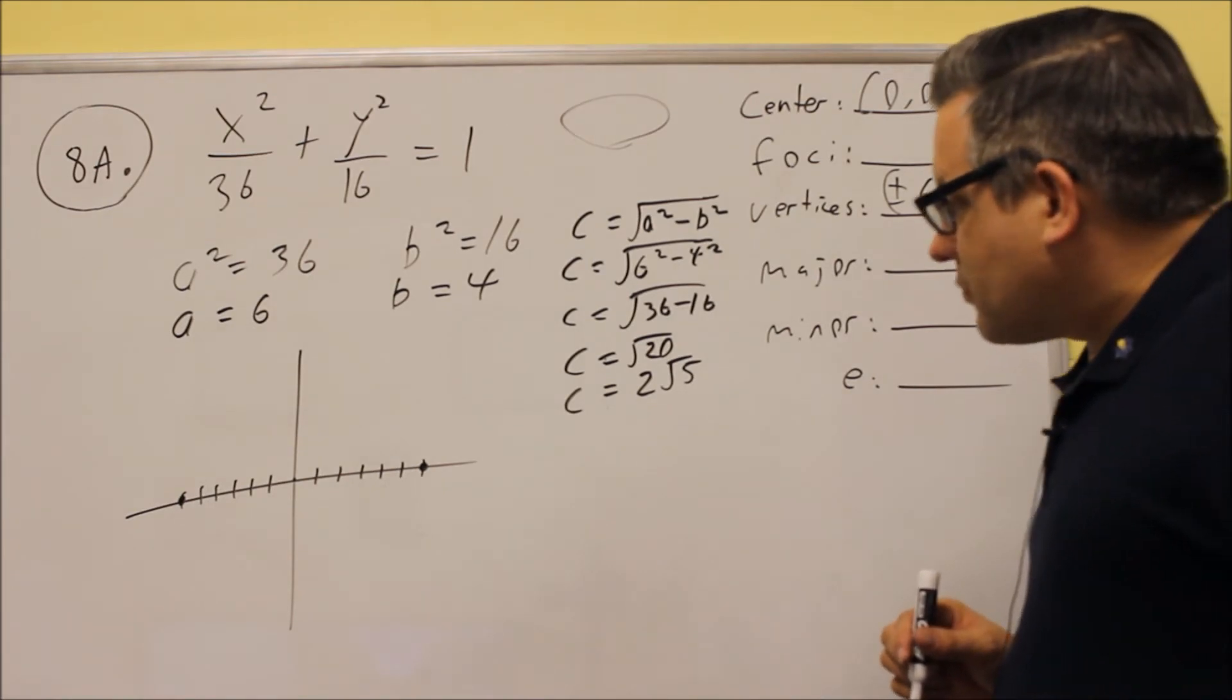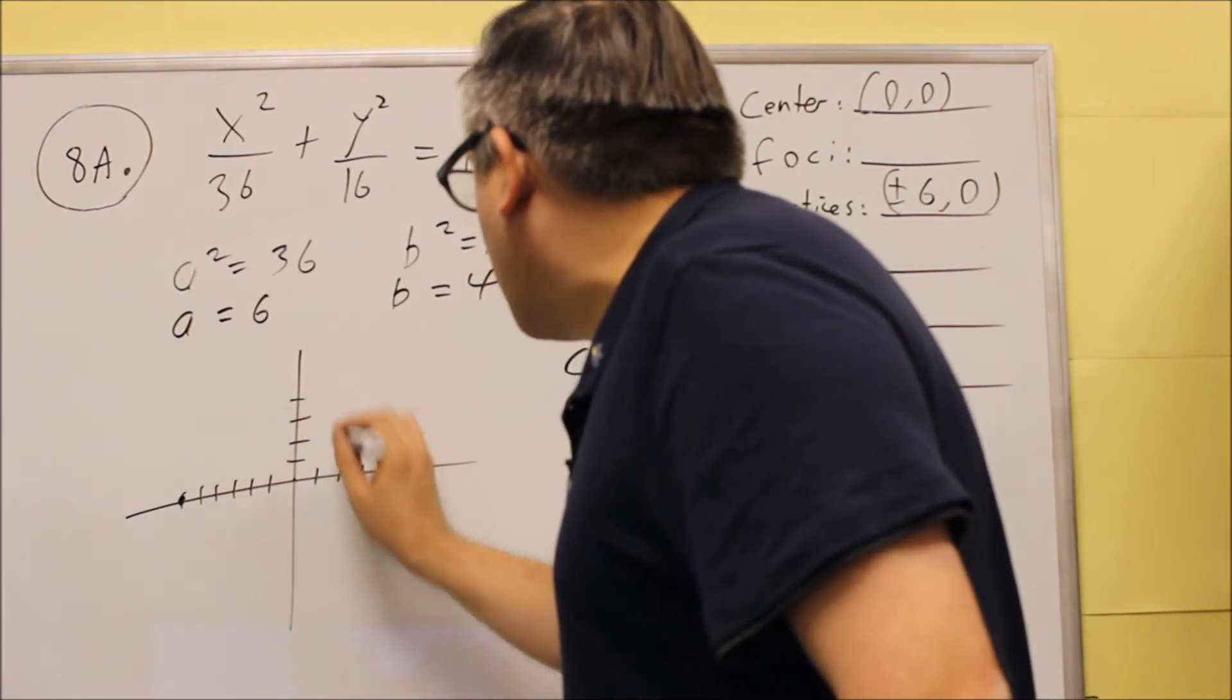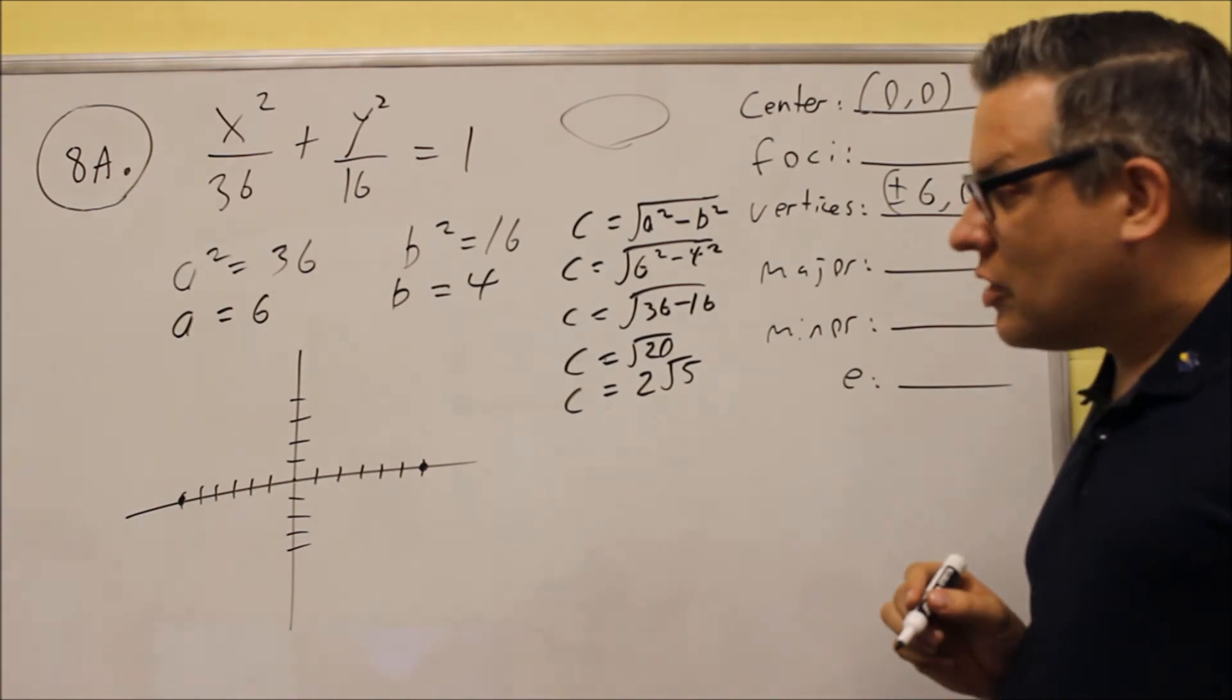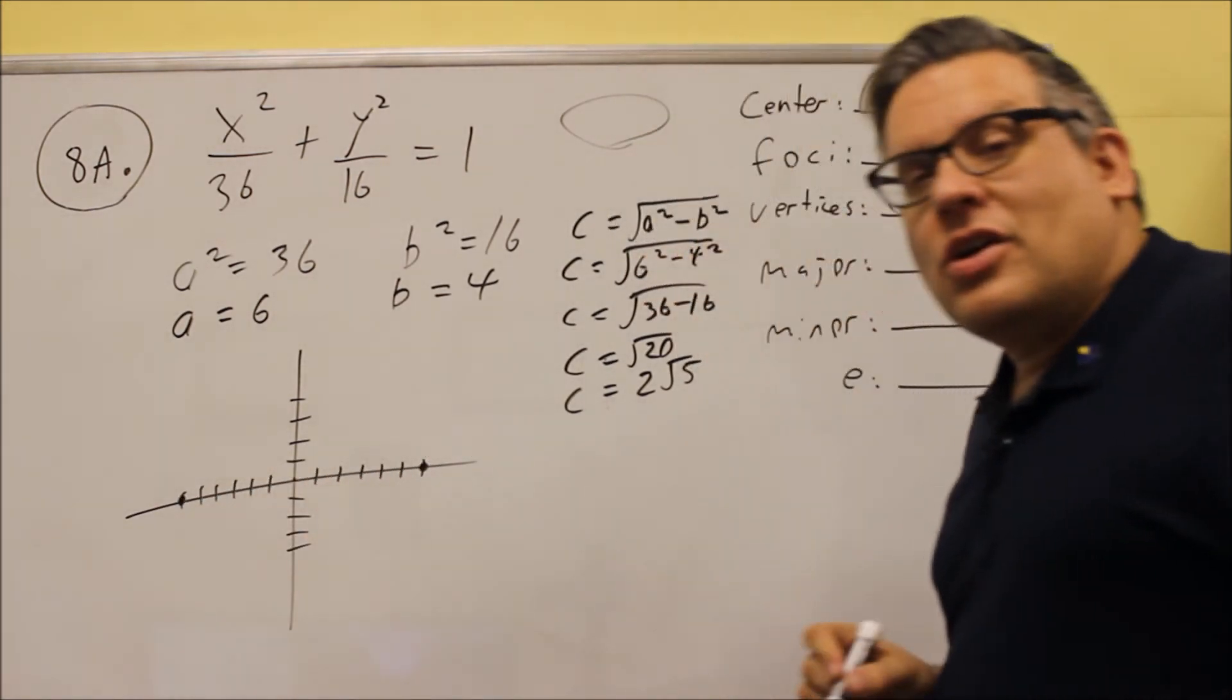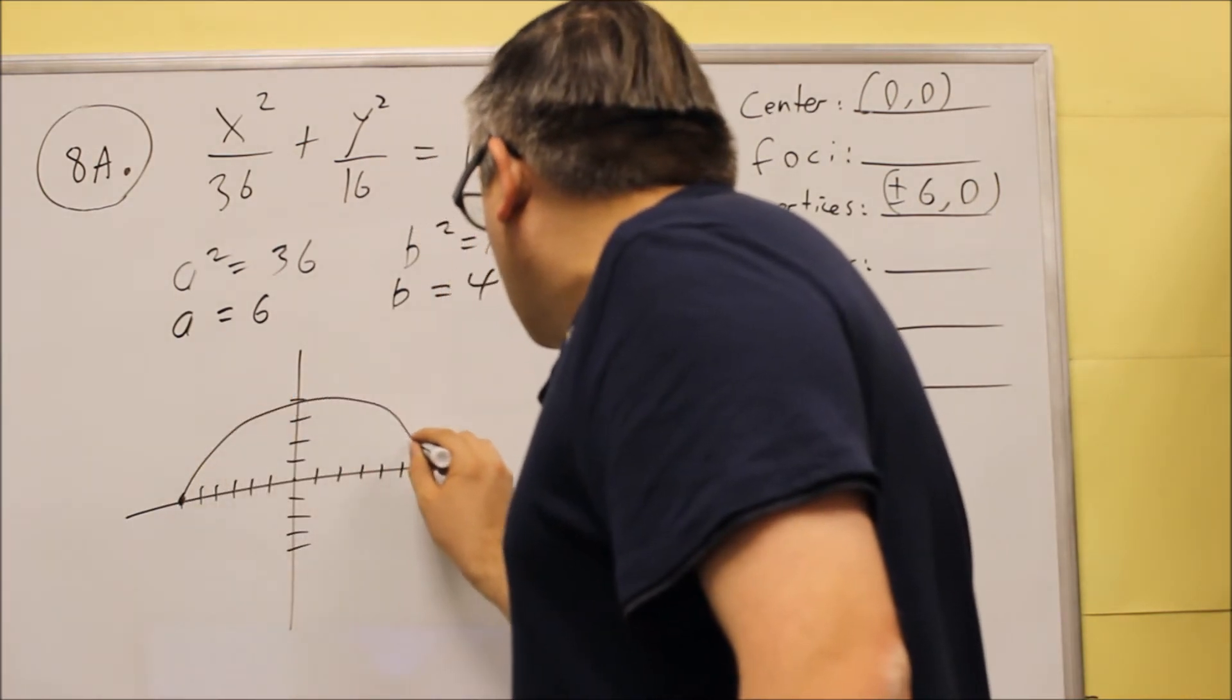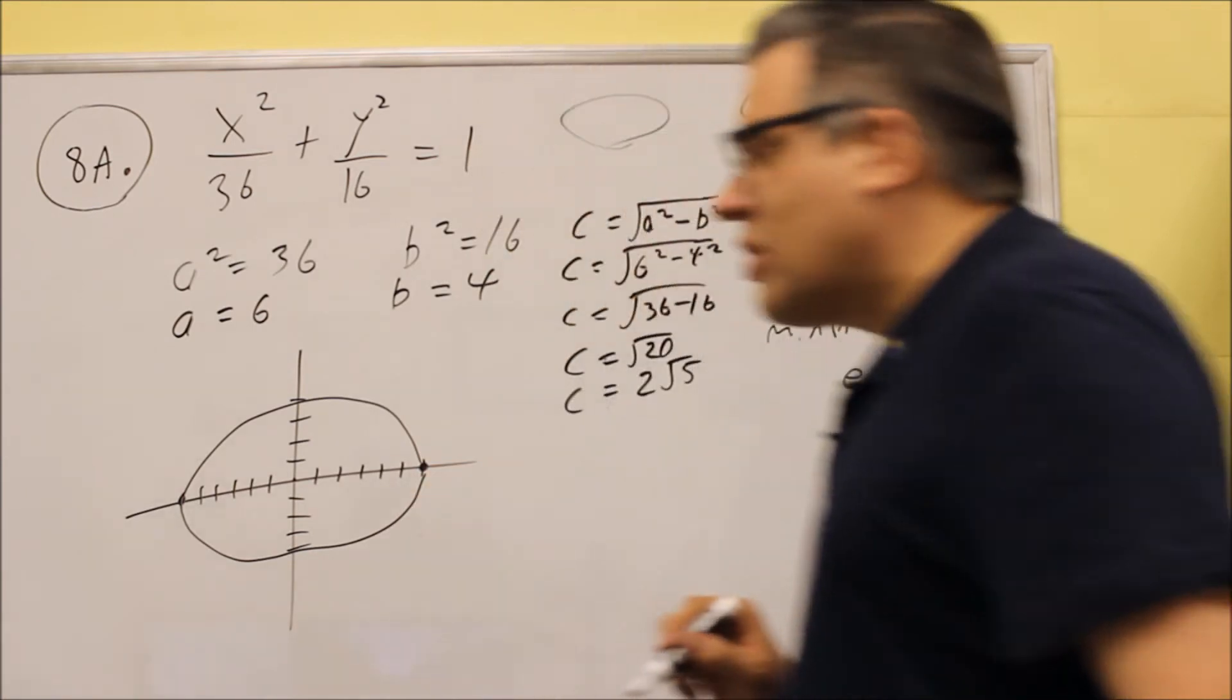Now, for the shorter direction, that's where we go for the 4. 1, 2, 3, 4, we go up, and 4, we go down. Now, those aren't considered vertices. Vertices are only on the major axis that you see. So once you draw the a and the b, now we actually know what the general shape of this ellipse is going to look like. It looks like that.